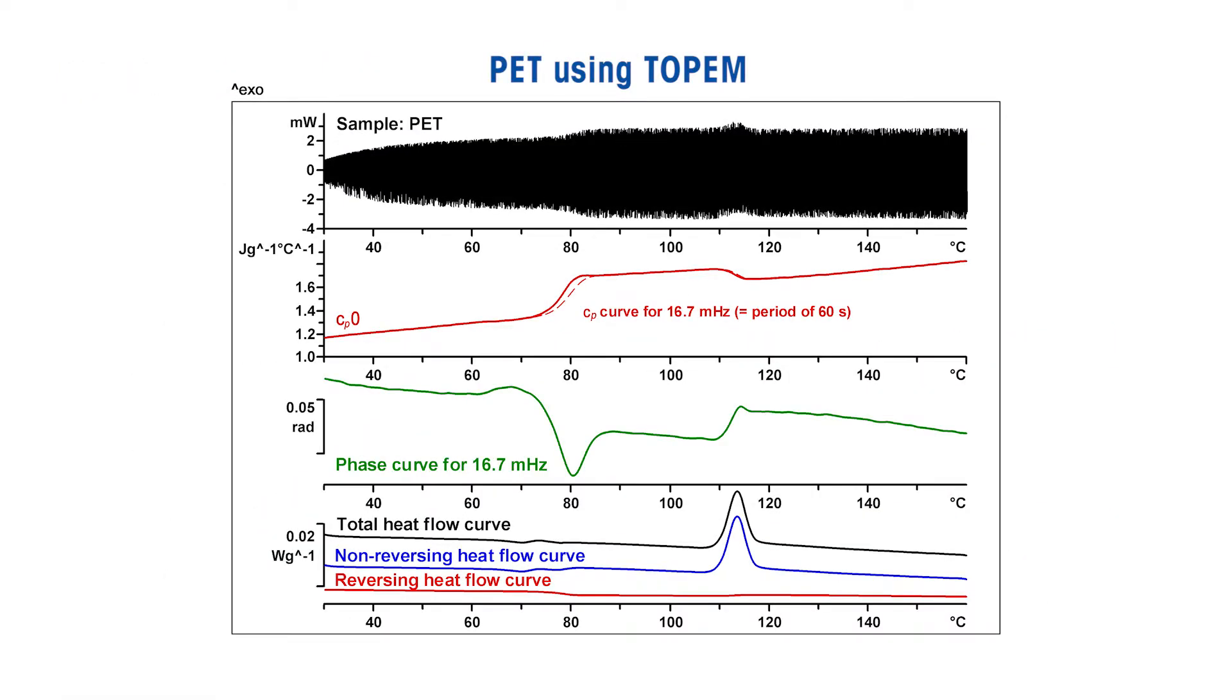In the remainder of this video, I will describe the Topham evaluation method performed on a PET sample. For Topham, the method window in STAR-E software is required to define the appropriate measurement parameters. The experiment is then sent to the module via the experiment window. The Topham measurement and evaluation process can be summarized in just four simple steps.